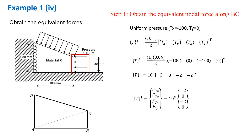Now let's reconsider Example 1 and obtain the equivalent forces for this problem. We have two applied uniform pressures — one at the side edge and one at the top surface of the structure, with pressure 100 kilo Pascal. We have to obtain the equivalent nodal forces for each applied pressure. Let's start with the pressure along edge BC.